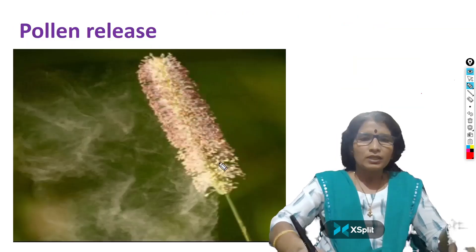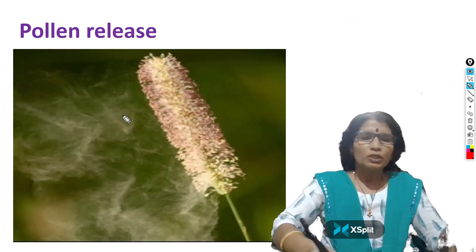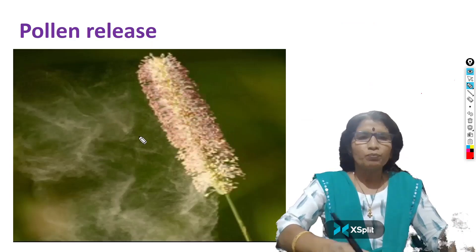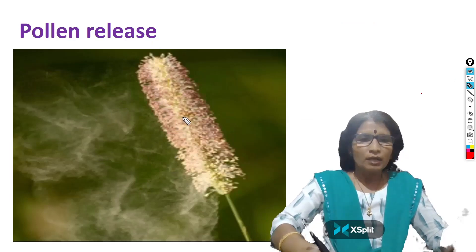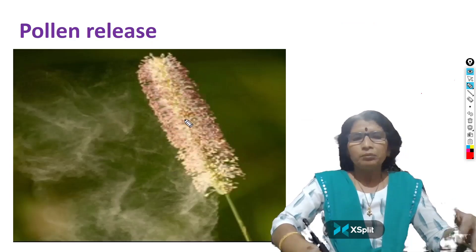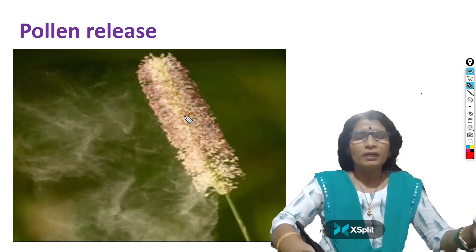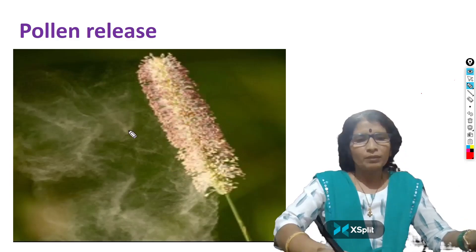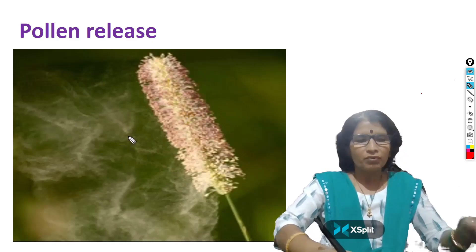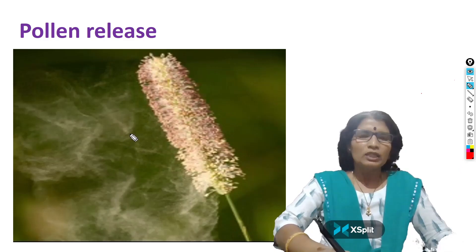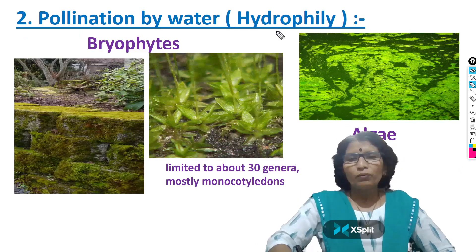This is a grass inflorescence producing a large number of pollen grains. In anemophily, generally a number of pollen grains become wasted, but due to overproduction of pollen grains, each and every flower of the inflorescence is pollinated.